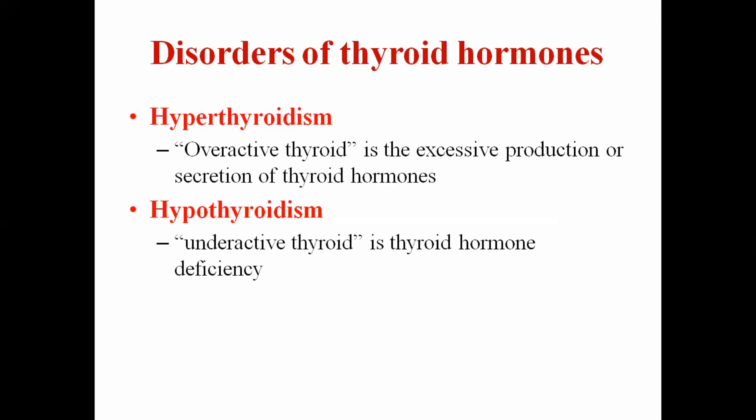These are the functions of thyroid hormones on different tissues. Now we will move on to the different disorders of thyroid hormones. When there is excessive production of thyroid hormones, it is called hyperthyroidism; when the body secretes low concentrations, it is called hypothyroidism.